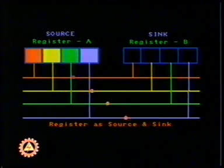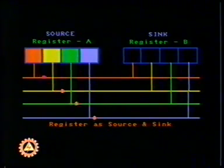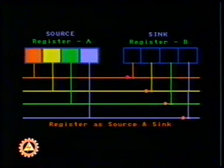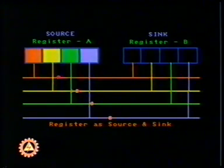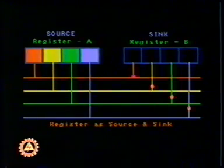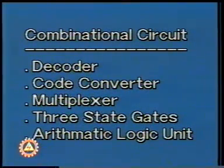The register may act as a source or a sink of a binary word. Communication between registers takes place through parallel paths known as a bus. Now we shall briefly review some combinational circuits: namely, decoder, code converter, multiplexer, three-state gates, and the arithmetic logic unit.